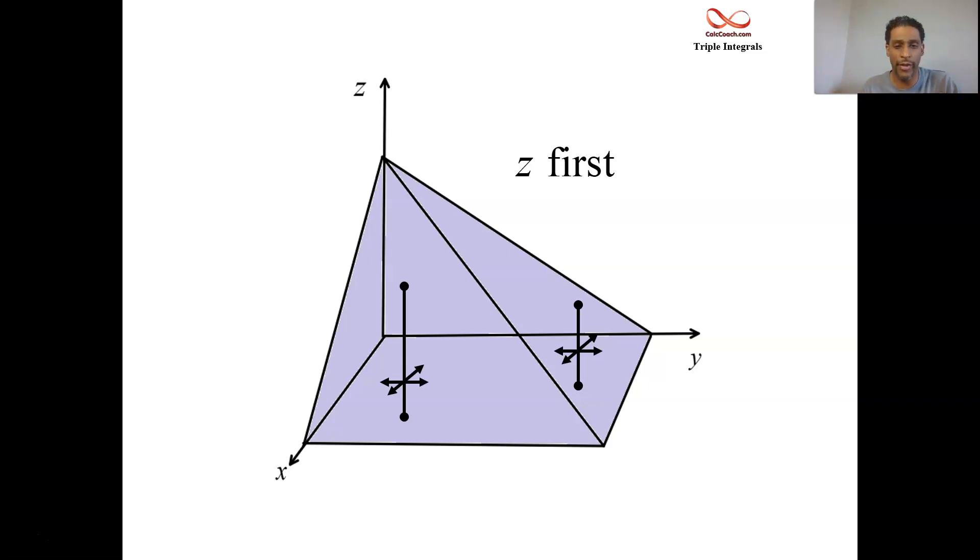And we're finding the volume of this tetrahedron. It's a pyramid looking shape. All right, so the z upper bound changes. Because the z upper bound changes, you wouldn't want to do z first because it will require two triple integrals.